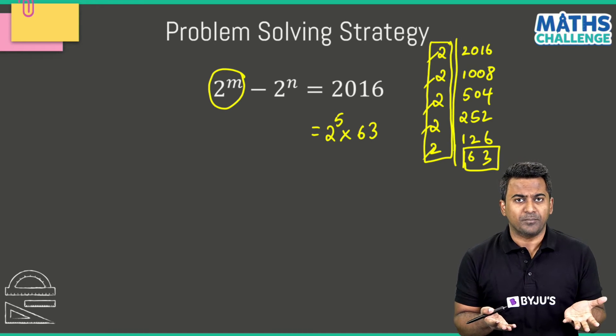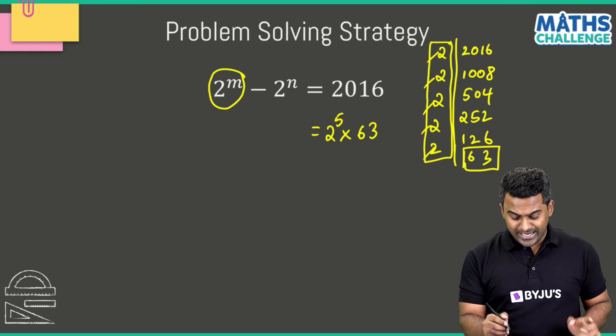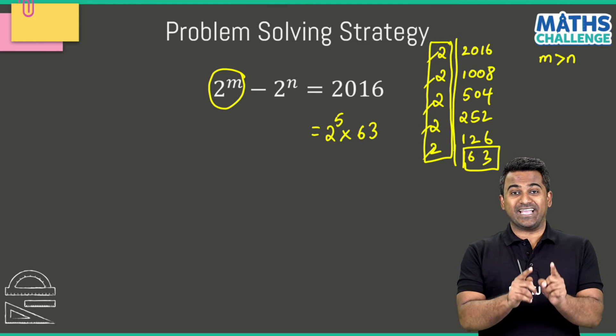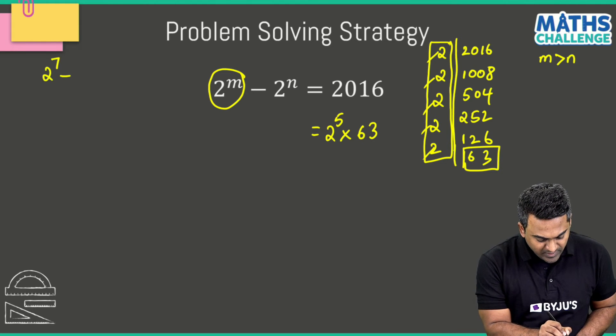I mean if you've understood this, 2 power m has got to be bigger than 2 to the power n because the right hand side is a positive number, right? So the power m has got to be bigger than power n. I'll write that down here: m has to be more than n. And this is where the trick gets smarter.